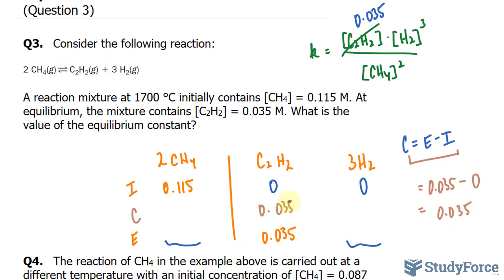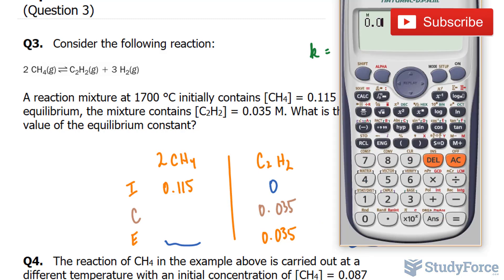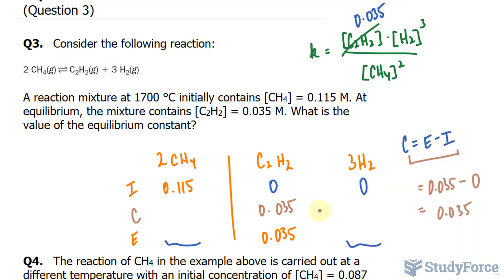And now I can use that to find out the changes in the other molecules. So there's a 1 to 3 ratio here. So we'll multiply this number by 3 to give us the change for H2. Using our calculator, 0.035 times 3 is 0.105.